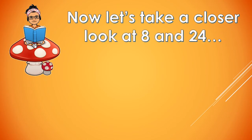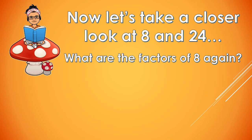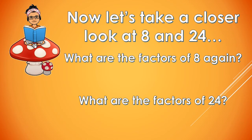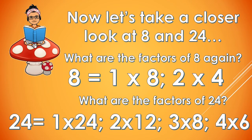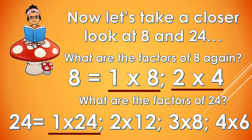Now, let's take a closer look at 8 and 24. The factors of 8 are 1 and 8, and 2 and 4 — that's 4 factors. The factors of 24 are 1 and 24, 2 and 12, 3 and 8, and 4 and 6 — that's 8 factors. So 8 and 24, aside from 1 and itself, have other factors. Meaning, 8 has more than 2 factors, and 24 also has more than 2 factors.